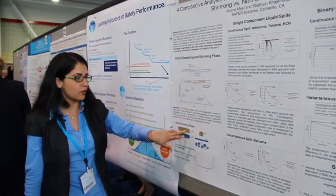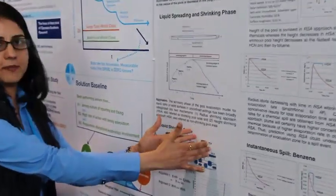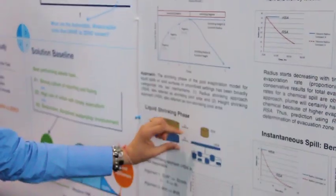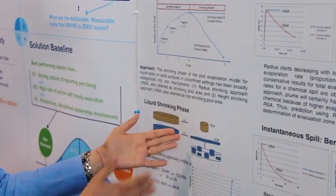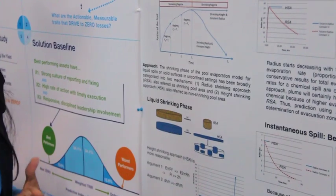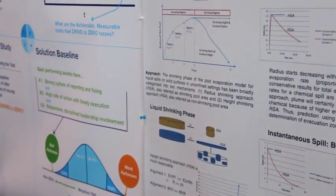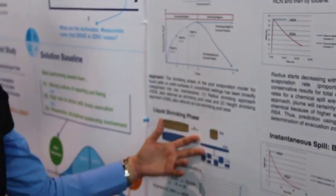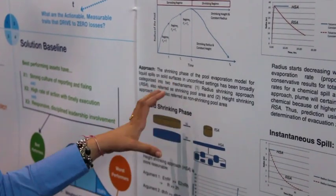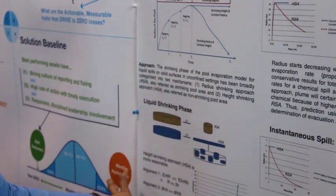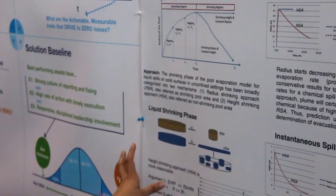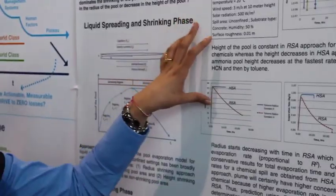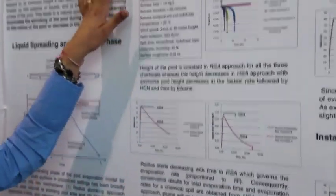Once you have your pool, is it going to decrease in radius — the radius-shrinking approach — or is it going to decrease in height, according to the height-shrinking approach? We present several arguments to say that the height-shrinking approach is a better approach, based on the mathematical foundation and the heat and mass transfer models.